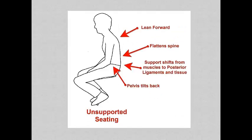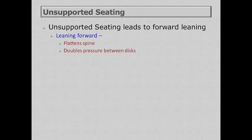When seated without support, we tend to lean forward, the pelvis tilts backwards, and the spine flattens out. Another important aspect is that our support shifts from our muscles to our posterior ligaments and tissues. Unsupported seating definitely leads to forward leaning, which tends to flatten the spine and increase disc pressure, and also shifts postural support from muscles to ligaments.